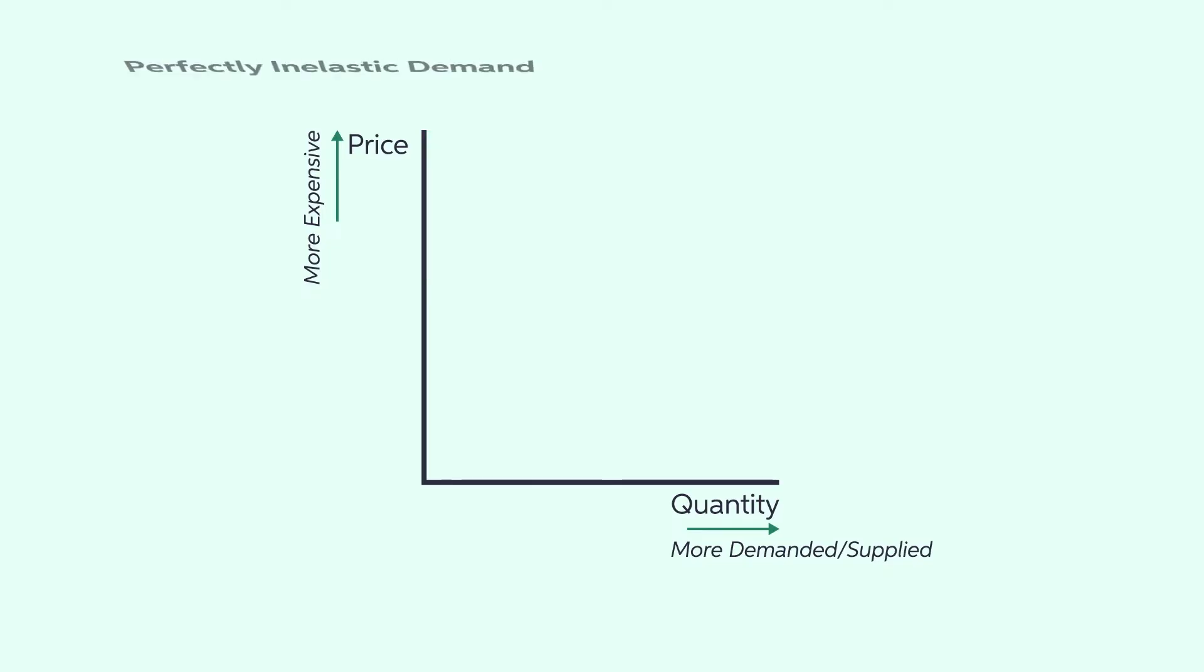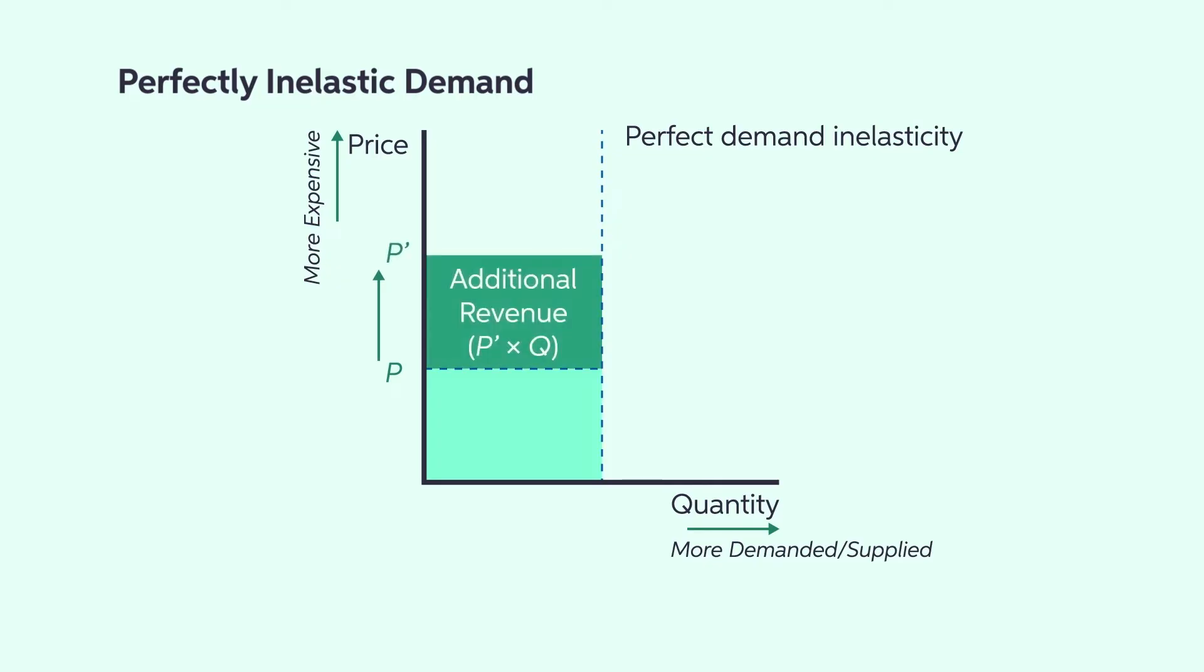Conversely, steeper demand curves make it easier for a firm to raise prices and increase revenue. Initially, firms have a total revenue of P times Q. If demand is inelastic, an increase in prices can increase total revenue to P times Q.